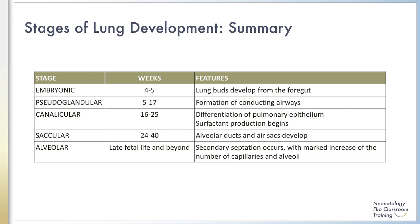This slide summarizes the major features of each of the five phases of lung development. To recap: during the embryonic phase between four and five weeks of gestation, the lung buds develop from the foregut. During the pseudoglandular phase between five and 17 weeks, the conducting airways form. During the canalicular phase between 16 and 25 weeks, the pulmonary epithelium differentiates into type 1 and type 2 pneumocytes and surfactant production begins. During the saccular phase between 24 and 40 weeks, the alveolar ducts and air sacs develop. Finally, during the alveolar stage, which begins late in fetal life and continues into childhood and beyond, there is secondary septation with a dramatic increase in the number of capillaries and alveoli.